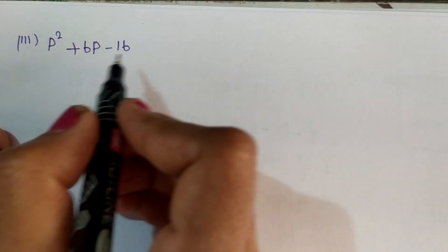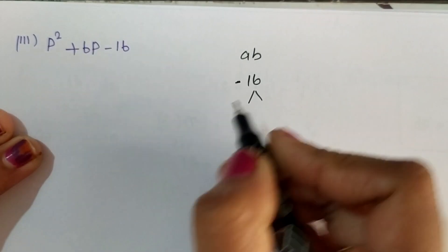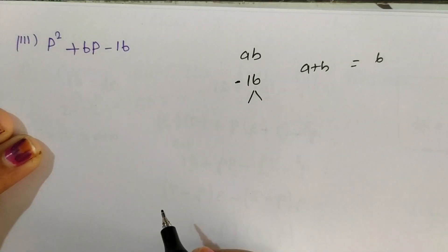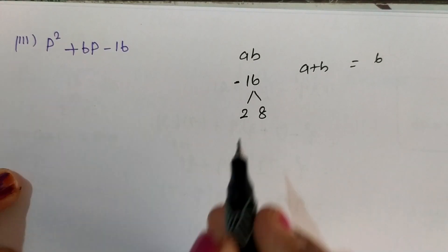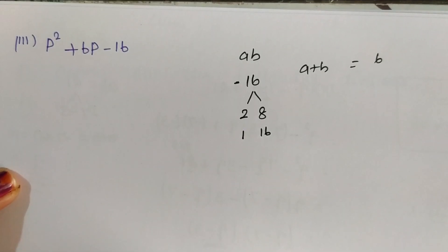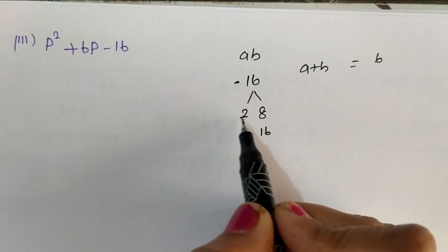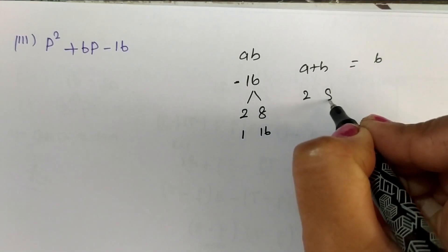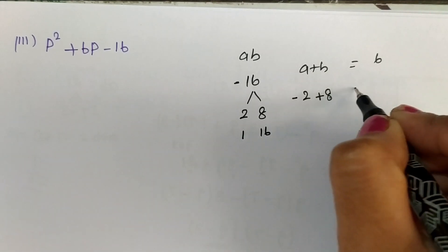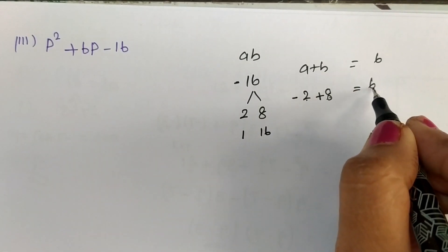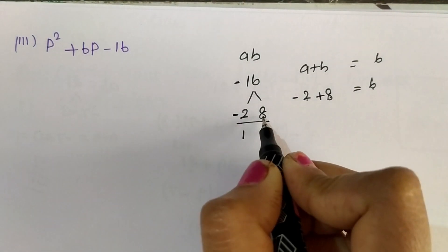Next question: P square plus 6P minus 16. Here AB equal to minus 16 and A plus B should equal 6. The factors of 16 are 2 and 8, or 1 and 16. Let us check 2 and 8 — 2 eights are 16, and we need minus 16, so we take one factor as negative. Plus 8 minus 2 is plus 6, and minus 2 into plus 8 is minus 16. So the factors minus 2 and plus 8 work.